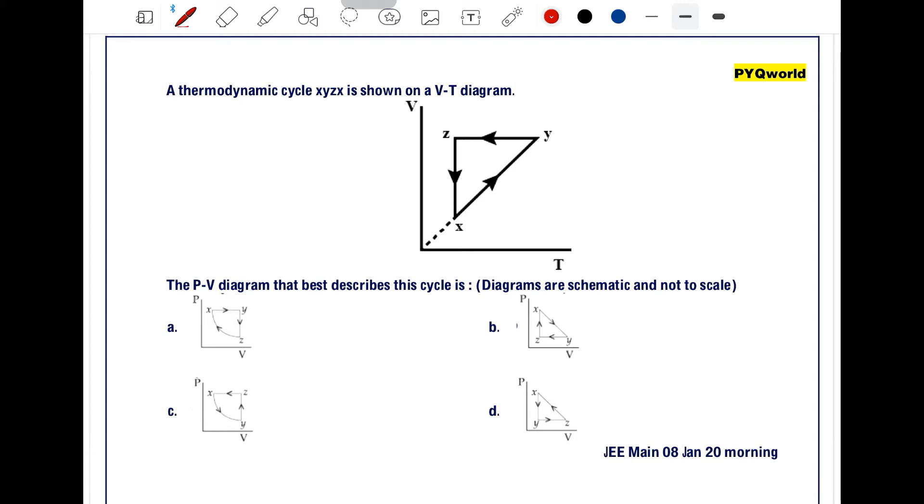We will start from the y-z process. For the y-z process, volume is constant. So as volume is constant, pressure into volume - this is an isochoric process. So for the isochoric process y-z, volume is constant, right?